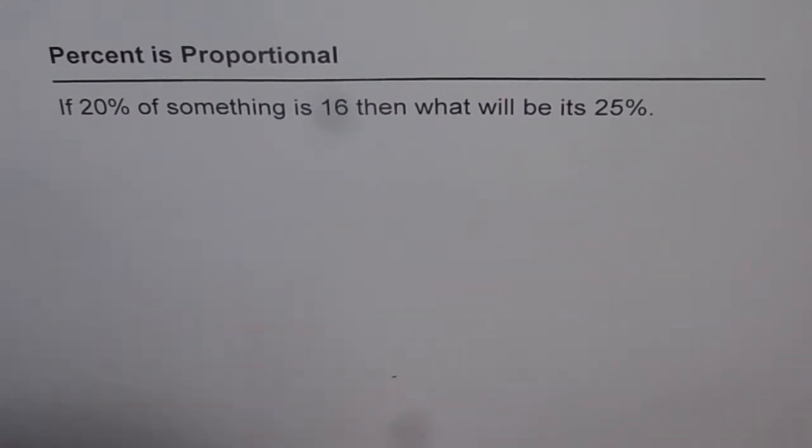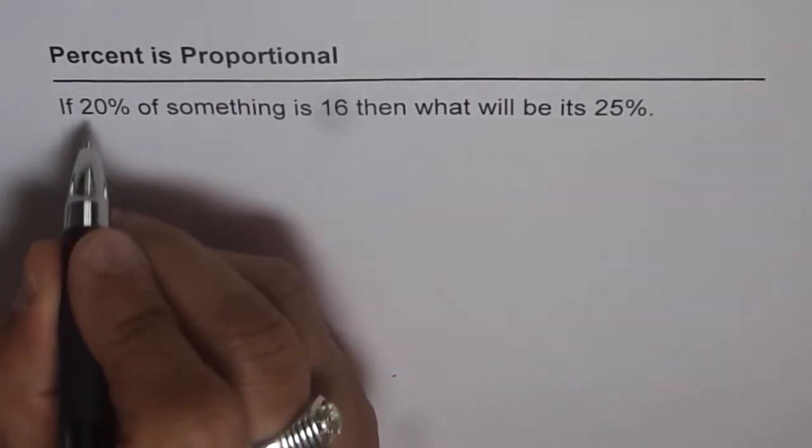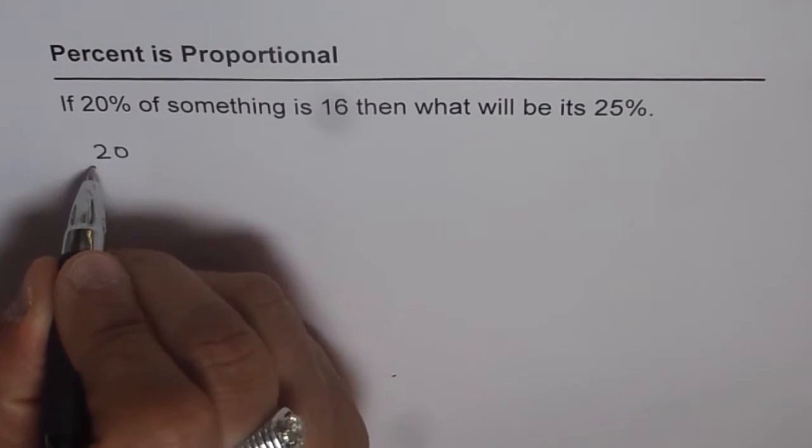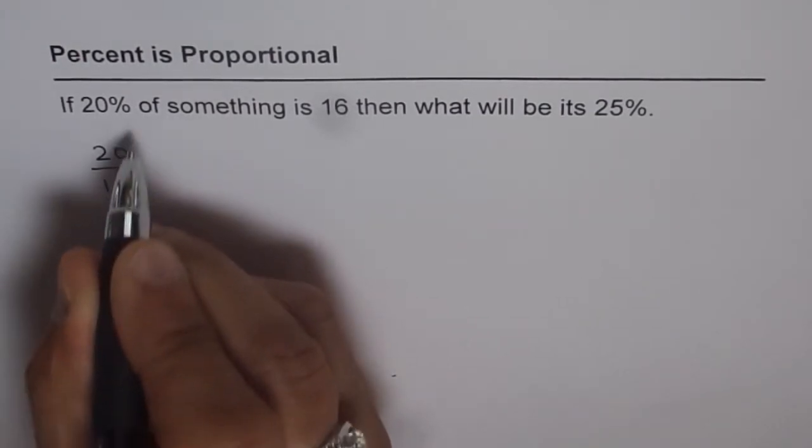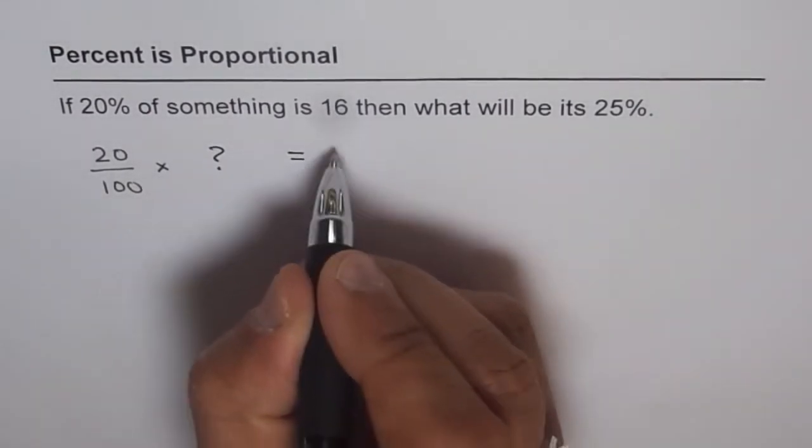If 20% of something and something we don't know, so we can write down our equation as 20% means 20 out of 100, of means times, something we don't know is means equal to 16.